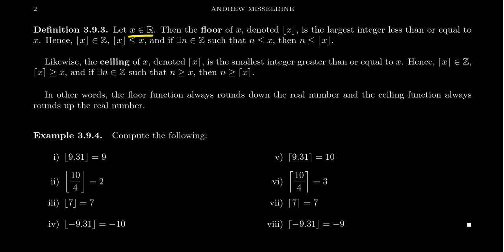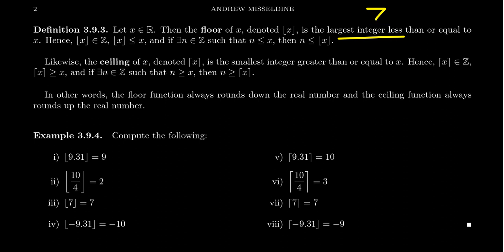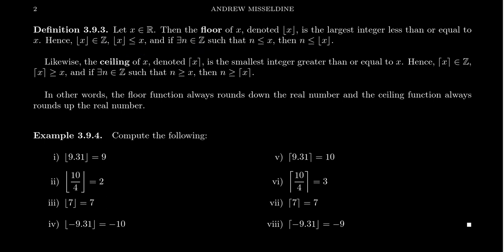If X is a real number, then the floor of X — denoted with brackets that have a bend only at the bottom — is going to be the largest integer that is less than or equal to X. The floor of X is an integer, even though X was a real number. It will be less than or equal to X, and it's the largest integer with this property. So if there exists some integer N such that N is less than or equal to X, then N is less than or equal to the floor.